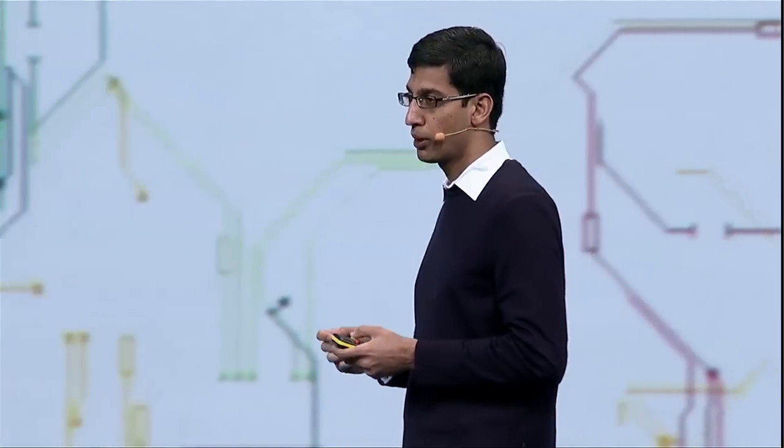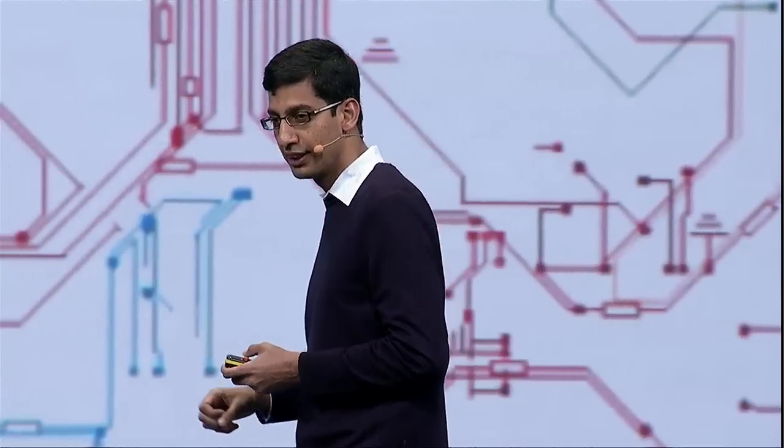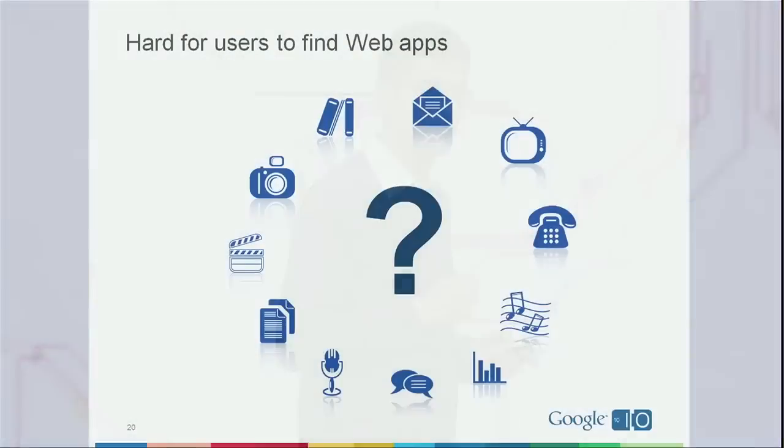We've seen these great web applications and what you can do with HTML5, but I want to talk about a couple of problems which remain on the web. The first is that it is very hard for users to find web applications. In the earlier days you could walk into a retail store and pick software off the shelf, then sites like download.com for desktop apps. But since 2004, web applications are the main way developers are writing apps, and it's very hard to find them. Let's try to find a great chess game on the web.